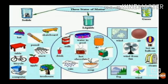Before we proceed further, let us see the three states of matter. Solid examples are hat, skateboard, pencil, table, snow, bicycle, apple, computer, tree, etc. Liquid: milk, drink, rain, soup, hot chocolate, water in pools, juice, etc. Gaseous: wind, air, wind from fan, hot air balloon, steam, fog, wind, etc. So, these are the states of matter: solid, liquid and gas.